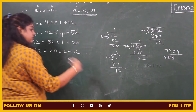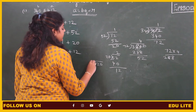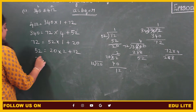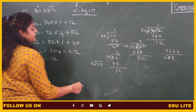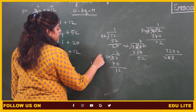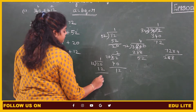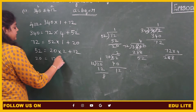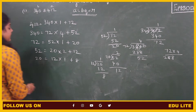Again it is not 0, therefore we have to proceed. 20 divided by 12: 20 is the dividend and 12 is the divisor. 1 times 12, remainder 8. So 12 into 1 plus 8.